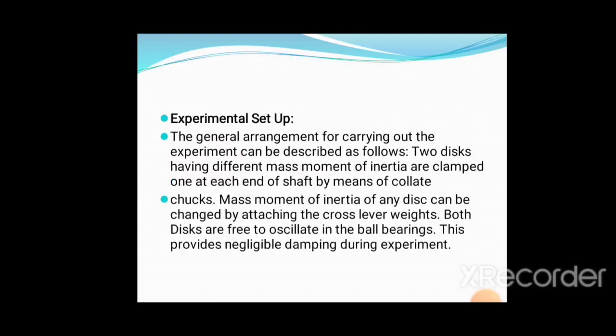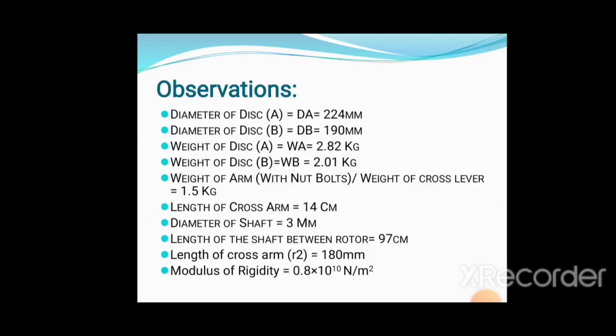Observations required for calculations: disc A has diameter 224mm and weight 2.82kg. Disc B has diameter 190mm and weight 2.01kg. Weight of arm is 1.5kg, length of arm is 14cm. Shaft diameter is 3mm and length between the two rotor systems is 97cm.